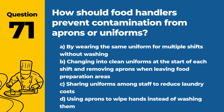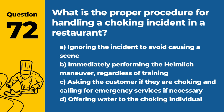Question 71. The answer is B: Changing into clean uniforms at the start of each shift and removing aprons when leaving food preparation areas. Clean attire helps prevent cross-contamination.